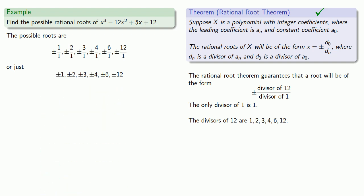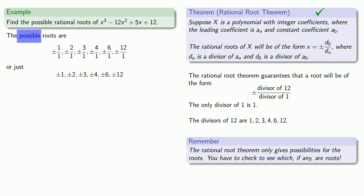One important thing to remember is that these are the possible roots. The rational root theorem only gives possibilities for the roots. You still have to check to see which, if any, are the actual roots.